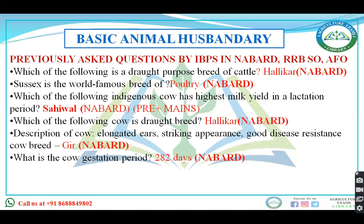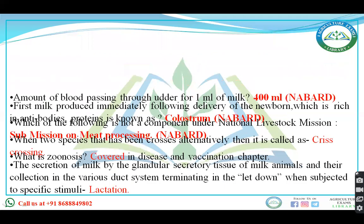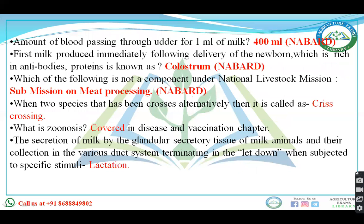They asked regarding the gestation period of cow — 282 or 285 days. They also asked about dehorning, the removal of horns, which should be followed in calves after 7 to 10 days. From the milk section, they asked: for production of 1 ml of milk, how much blood should pass through the udder — the answer is 400 ml. They also asked about colostrum, the first milk produced immediately after delivery, rich in antibodies and proteins.